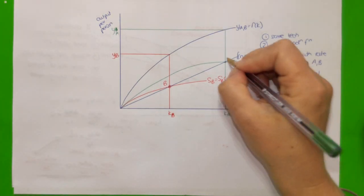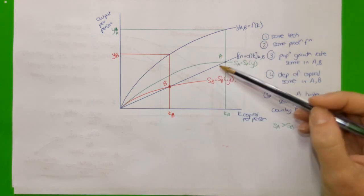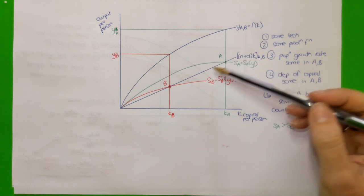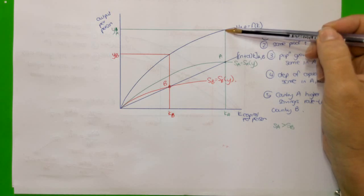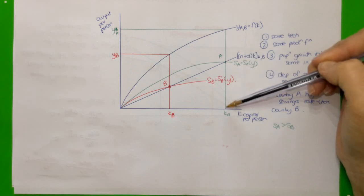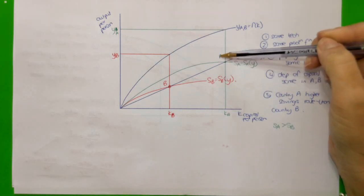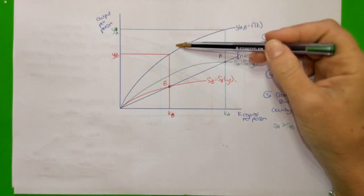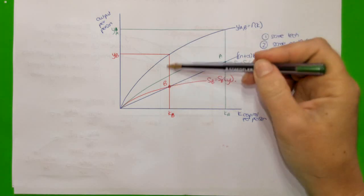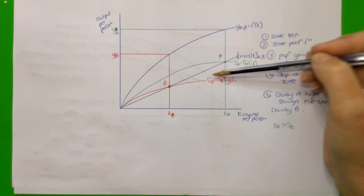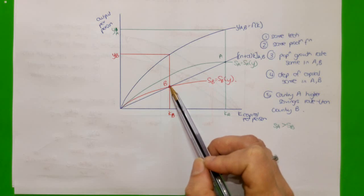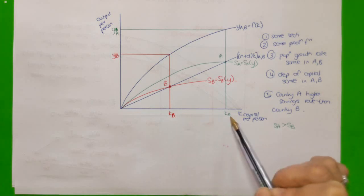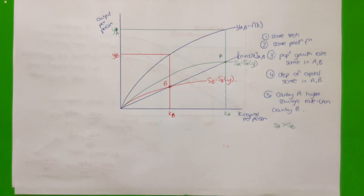The country with the higher savings rate, country A, is able to achieve a higher steady state equilibrium. So in steady state, output per person for country A is Y_A and capital per person is K_A, both higher than for country B. Country B, with its lower savings rate, reaches its steady state equilibrium where its savings function intersects the investment requirement line, at a lower level of both capital per person and output per person than country A.